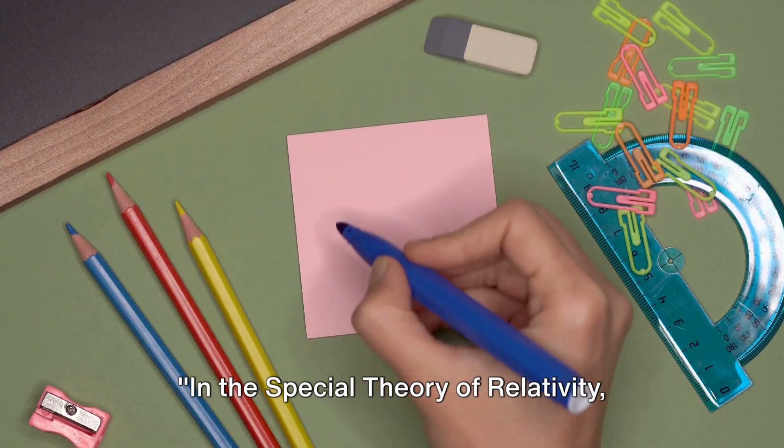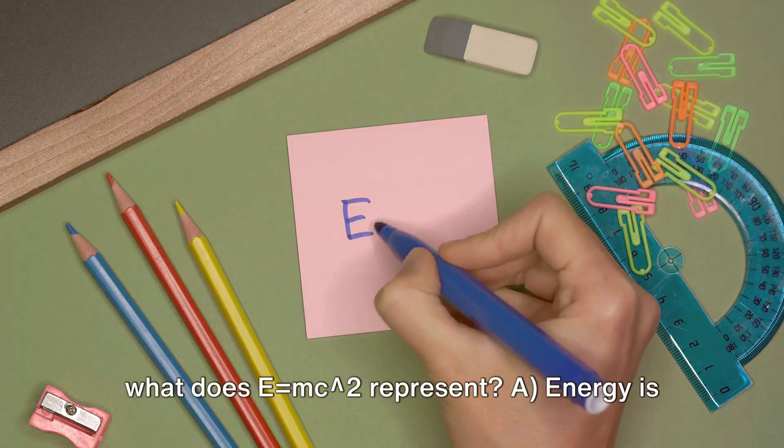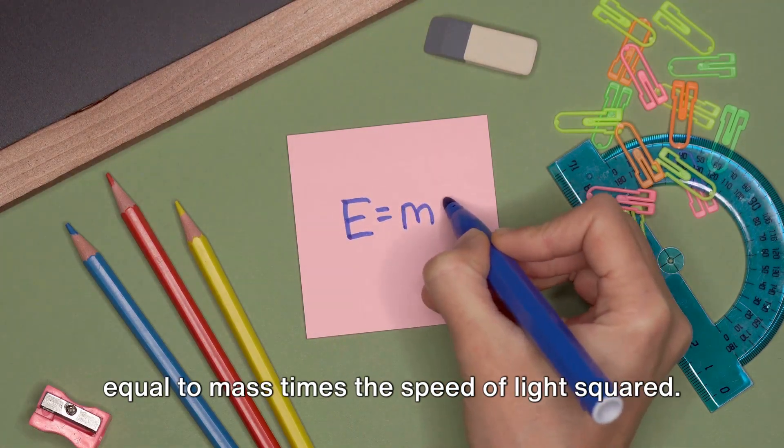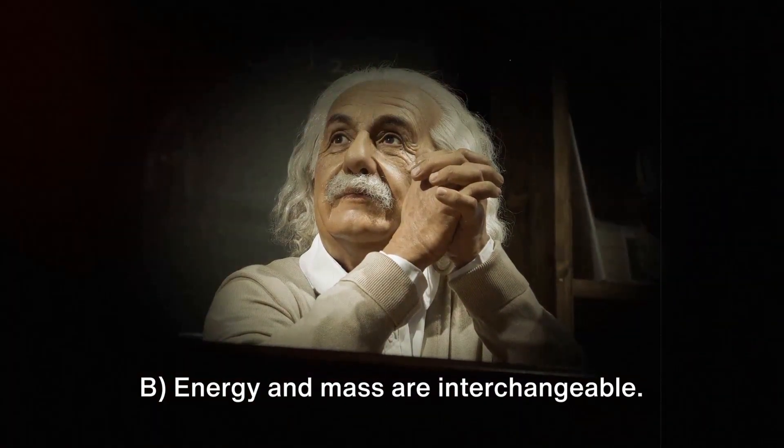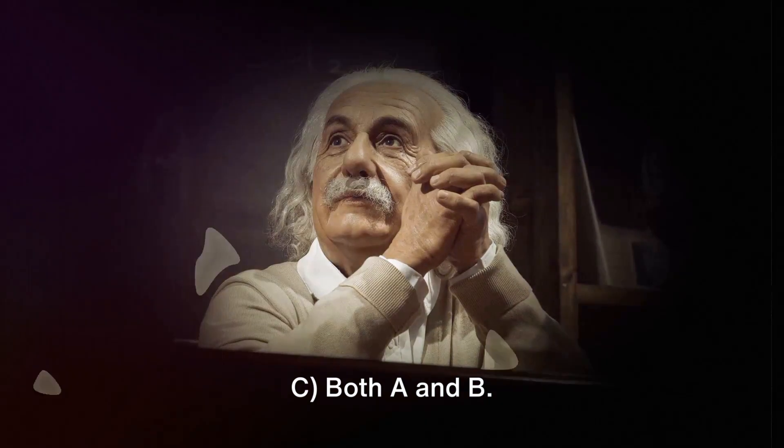In the special theory of relativity, what does E=mc² represent? A. Energy is equal to mass times the speed of light squared. B. Energy and mass are interchangeable. C. Both A and B.